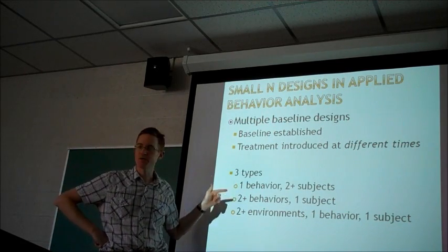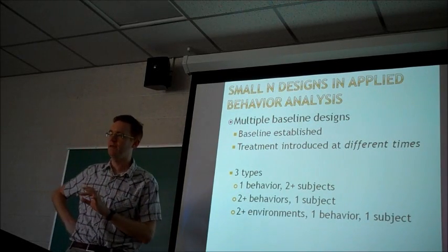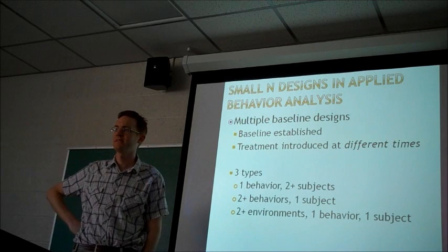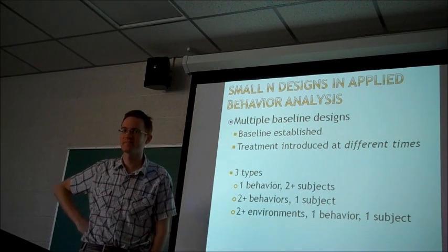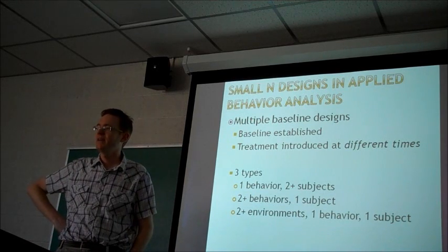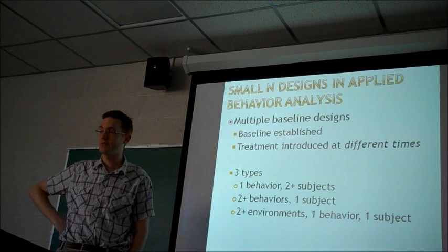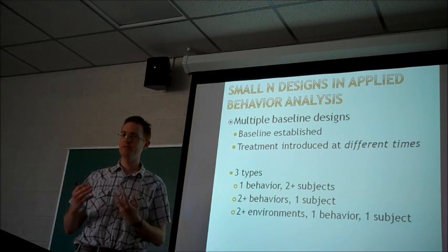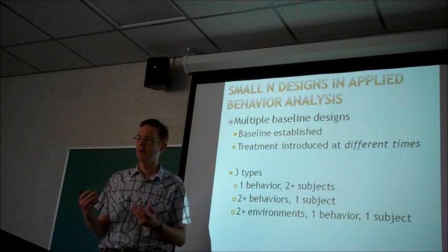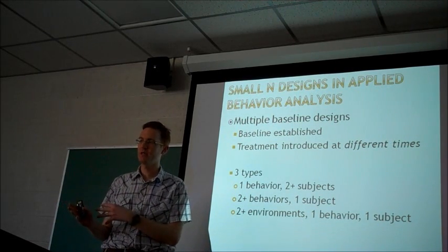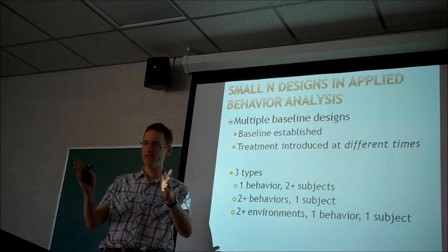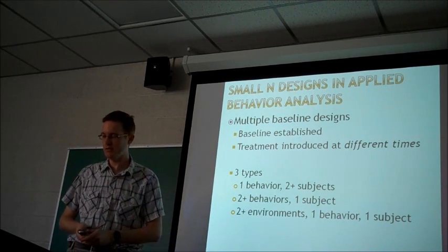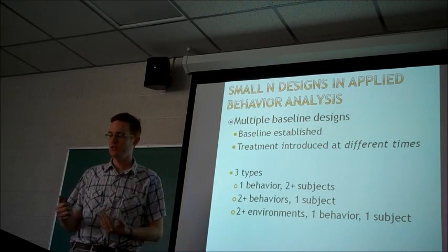On Wednesday we talked about the first type: the multiple baseline design that looks at one behavior across two or more subjects. The example we discussed was the stuttering treatment study. There were multiple subjects who all received treatment to help with their stuttering, but they received the treatment at different times — different numbers of therapy sessions. It established a baseline to look at how often they stuttered before treatment, gave the treatment at different times, and then looked at subsequent patterns of behavior.